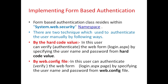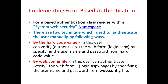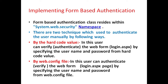Now we will see how to implement form-based authentication. The form-based authentication class resides within the System.Web.Security namespace. There are two techniques used to authenticate the user manually. First, by hard-coded value — the user can verify the web form by specifying the username and password from a hard-coded value. Second, by web.config file — the user can authenticate the web form by specifying the username and password from the web.config file.